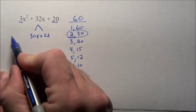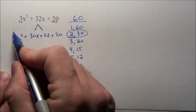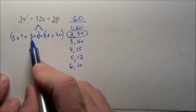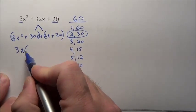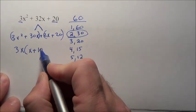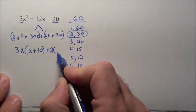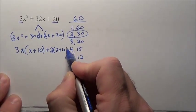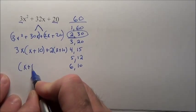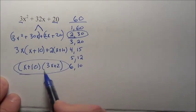Now we busted B into its two pieces: 3x squared plus 30x plus 2x plus 20, and we factor by grouping. From 3x squared plus 30x, a 3x comes out: 3x times x gives 3x squared, 3x times 10 gives 30x. From 2x plus 20, a 2 comes out: 2 times x gives 2x, 2 times 10 gives 20. Now we have x plus 10 and x plus 10, so that comes out front and we're left with 3x plus 2. That's what it factors to.